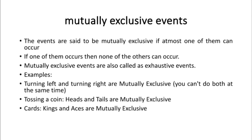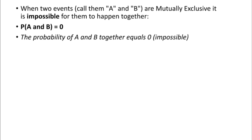Another example: when you toss a coin, either it can come up heads or it can come up tails — both cannot occur at the same time. Similarly with cards, either you can select a king or you can select an ace — you can't select both. So if one event is happening, no other event can happen.